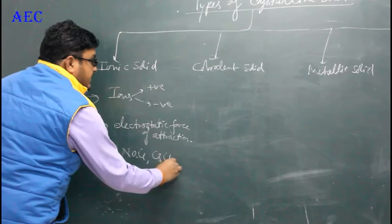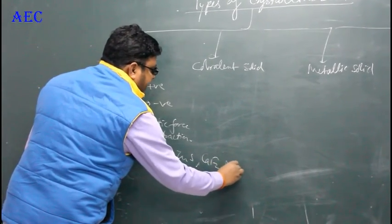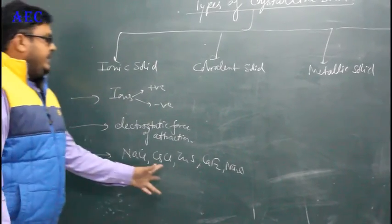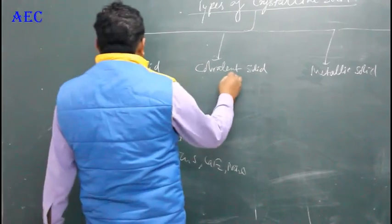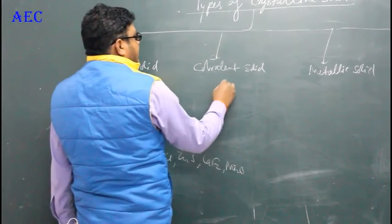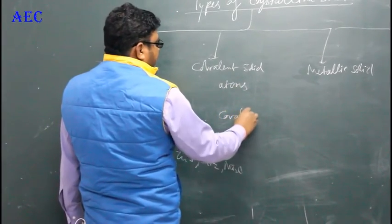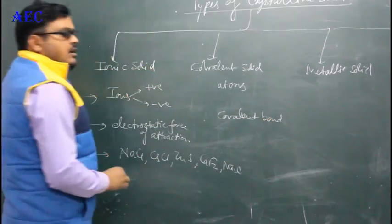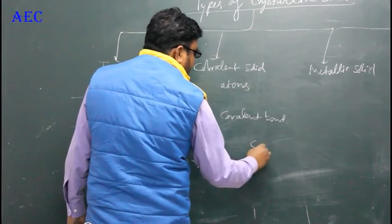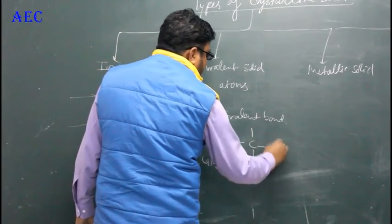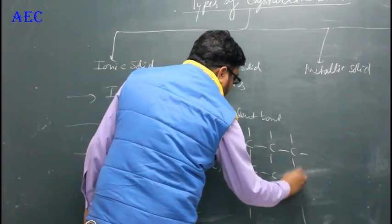Examples of ionic solids discussed in this chapter are NaCl, CsCl, ZnS, CaF2, and Na2O. For covalent solids, the constituent particles are atoms, and the force holding them together is the covalent bond. Examples are graphite and diamond, in which carbon chains are made with covalent bonds.